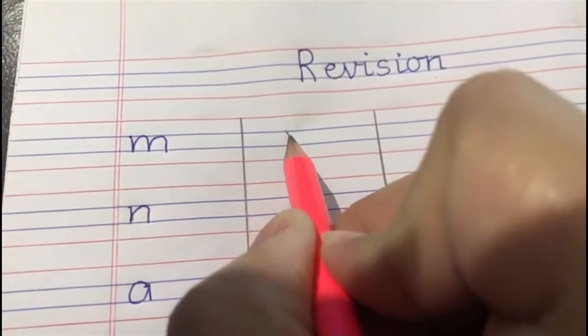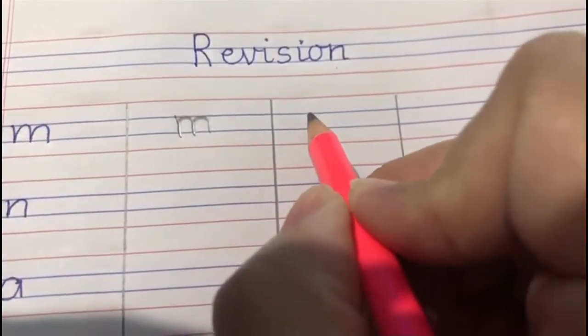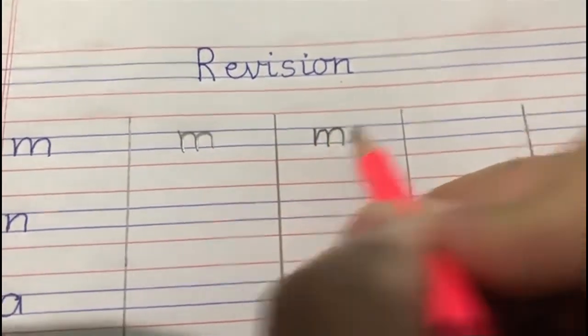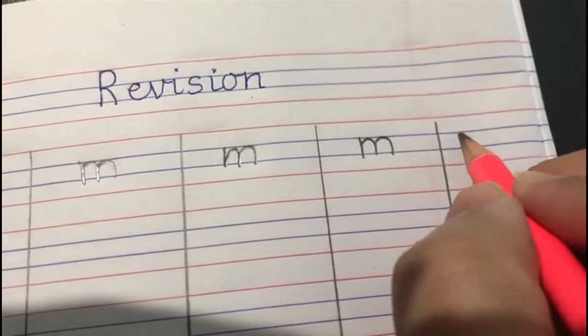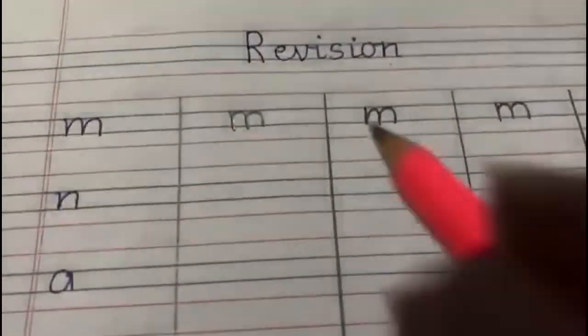So, start from the blue line, go down, up, bumpity, bumpity. M. You are going to say and you are going to write, okay? From blue line to blue line down, then bumpity, bumpity. M. Up to down, bumpity, bumpity. M. Up to down, bumpity, bumpity. M. M says m. M says m.